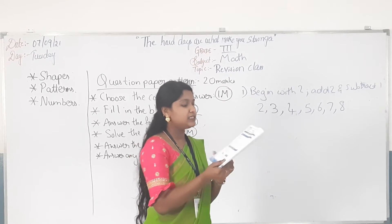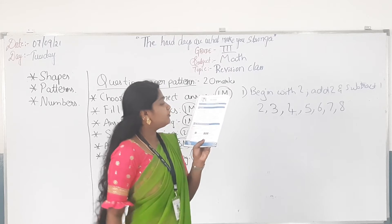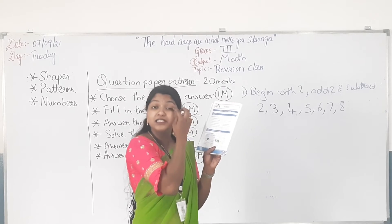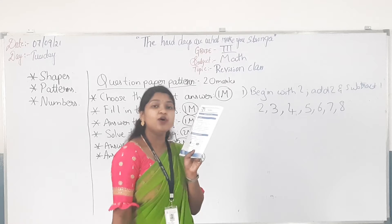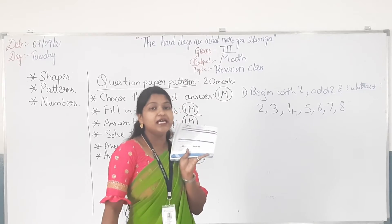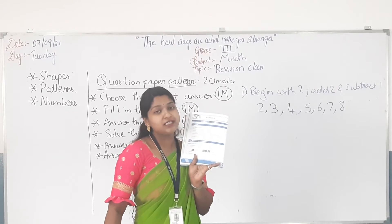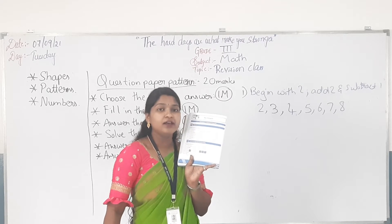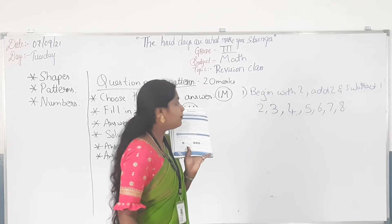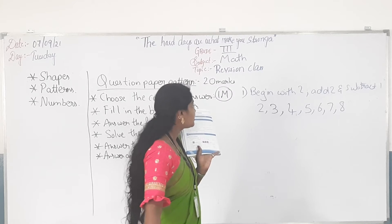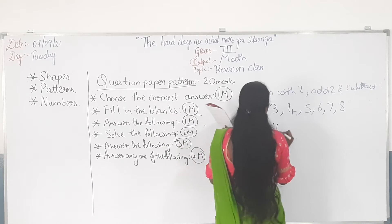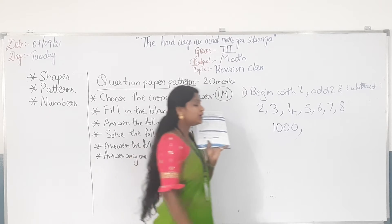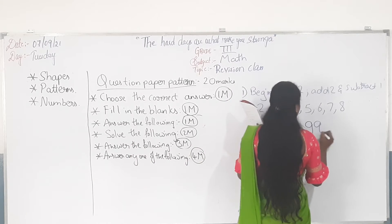Now open the next chapter: numbers. First question, the multiple choice question: the smallest 3-digit number is 100. The smallest 4-digit number is 1000. The largest 4-digit number is 9999.